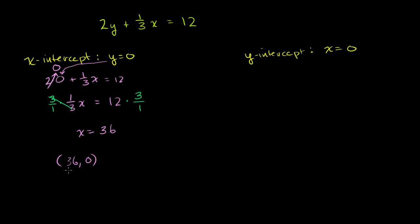Now let's do the same thing for the y-intercept. So let's set x equal to 0. So you get 2y plus 1/3 times 0 is equal to 12. Once again, anything times 0 is 0, so that's 0. And you're just left with 2y is equal to 12. Divide both sides by 2 to solve for y. And you're left with y is equal to 12 over 2, which is 6. So the y-intercept is when x is equal to 0 and y is equal to 6.